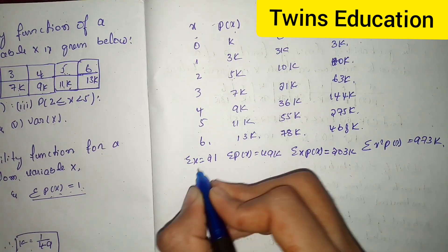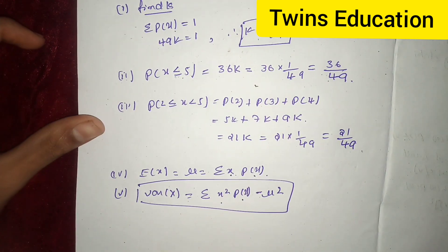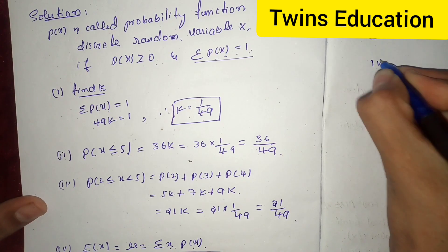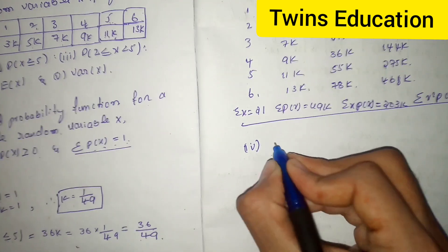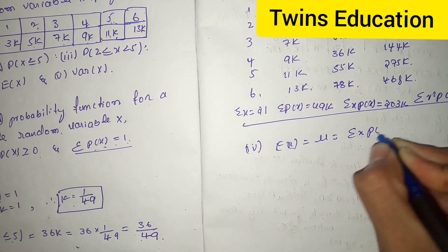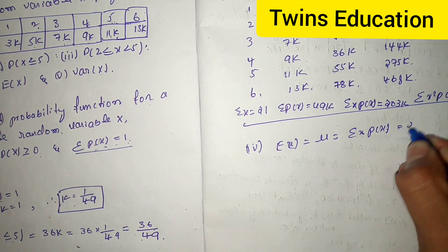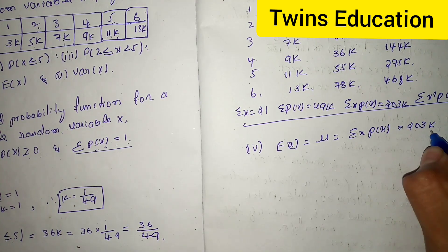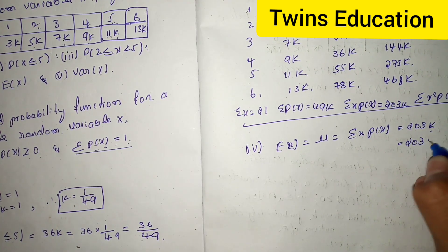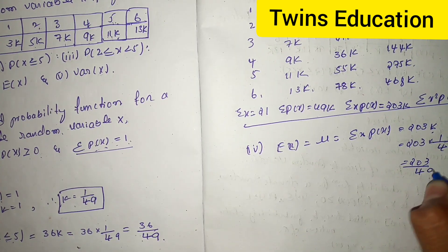Now, by using these values, I will calculate mean and variance. Here, fourth condition: E of x is equal to mu is equal to summation of x p of x. What is summation of x p of x? 203k. What is the value of k? 1 by 49. 203 into 1 by 49, which is equal to 203 by 49.